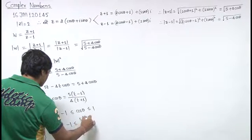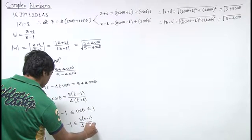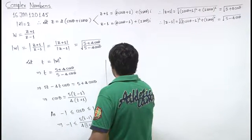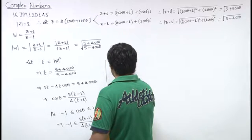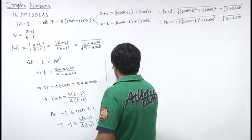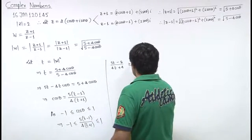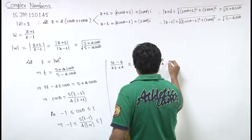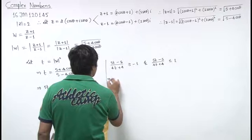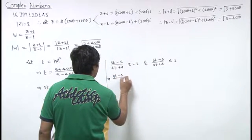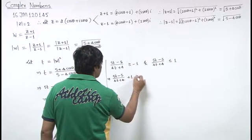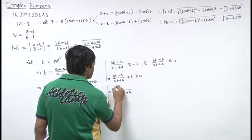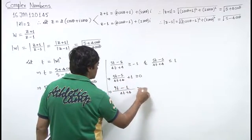So we have, we solve this. So we have 5t minus 5 upon 4t plus 4 is greater equal to minus 1 and 5t minus 5 upon 4t plus 4 is less than equal to 1. Minus 1 when we take to the other side and solve, this is 5t minus 5 upon 4t plus 4 plus 1 is greater equal to 0. So we have 4t plus 4, and when we take LCM and solve, we get 9t minus 1 is greater equal to 0.